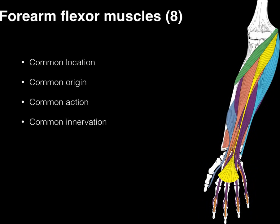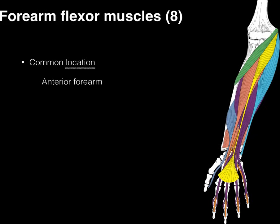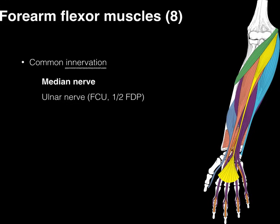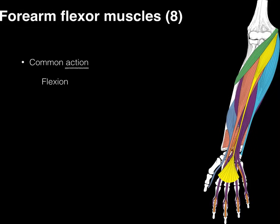Summarizing the eight forearm flexor muscles: their common location is the anterior forearm — muscles whose tendons go to the palm are flexors. Their common origin is the medial epicondyle of the humerus, from which five of the eight arise. Innervation is predominantly the median nerve, except for the flexor carpi ulnaris and half of the flexor digitorum profundus, which are ulnar nerve. Their common action is flexion.